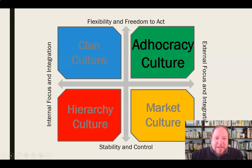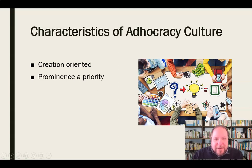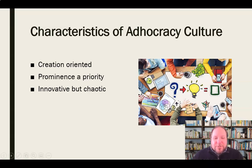In an adhocracy culture, there's a high degree of flexibility and freedom to act, but with a very external focus — as opposed to the internal focus of clan culture. Some characteristics include being very creation-oriented, all about creativity and spurring as much creative thinking as possible. Prominence is a priority — they want to be the best and at the top. They're going to be innovative, but also somewhat chaotic because encouraging so much creativity and free thinking creates a loose structure where things can slip through the cracks.